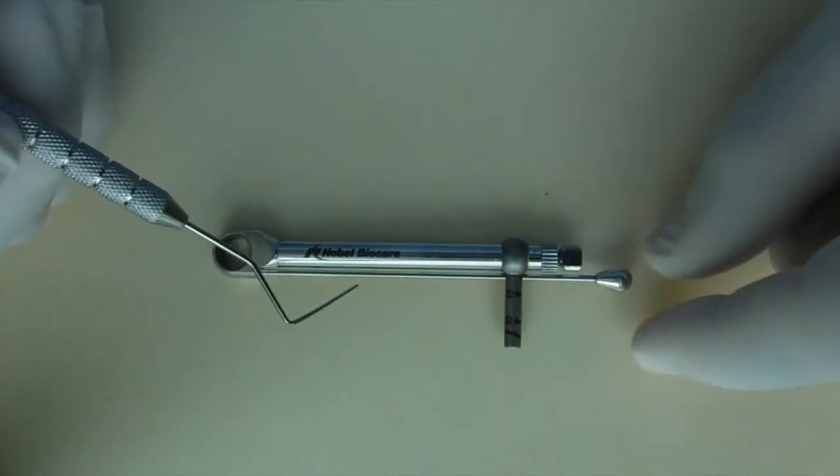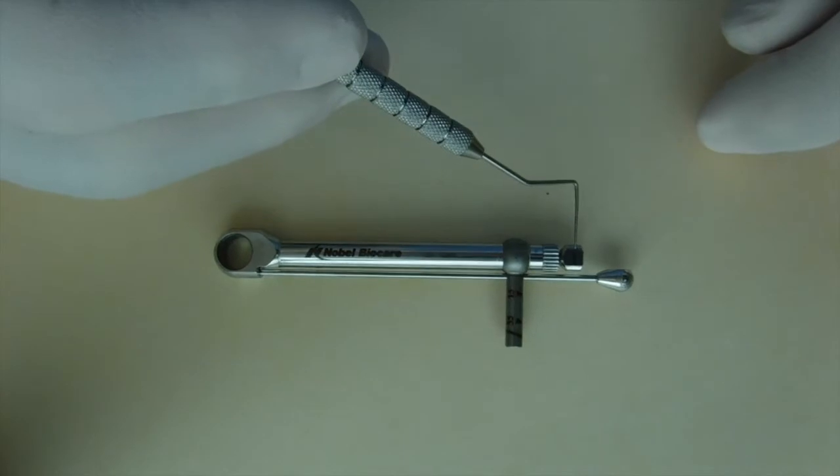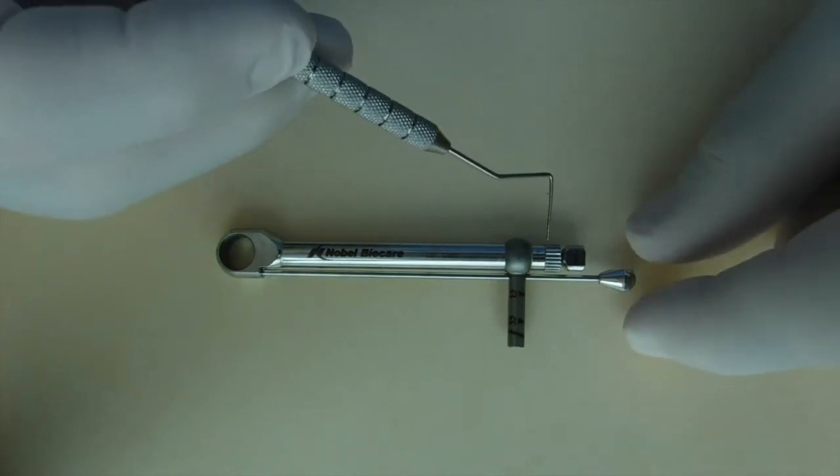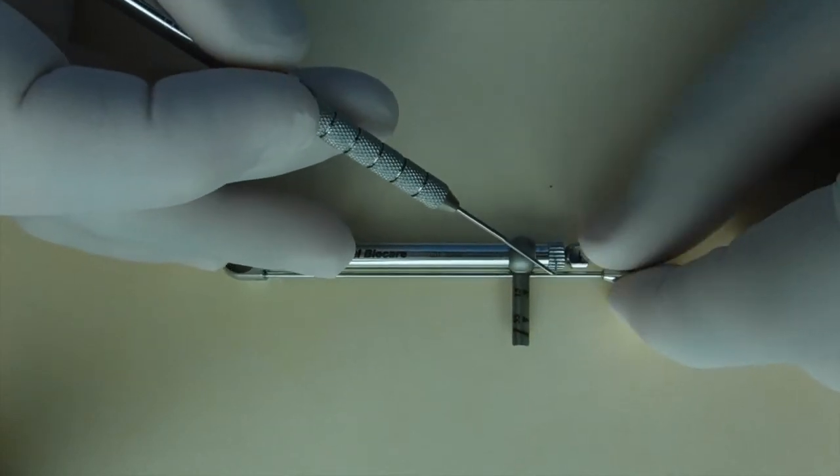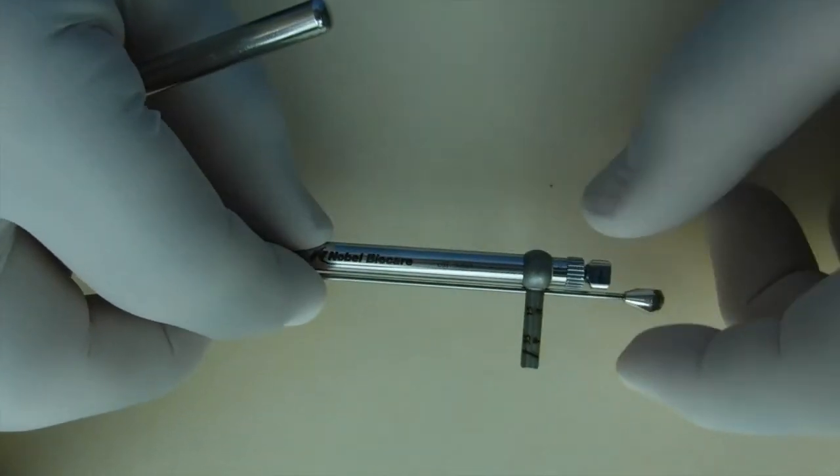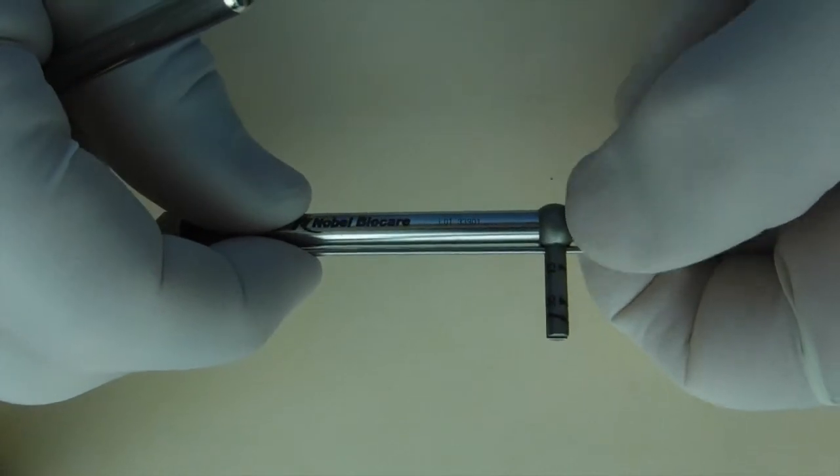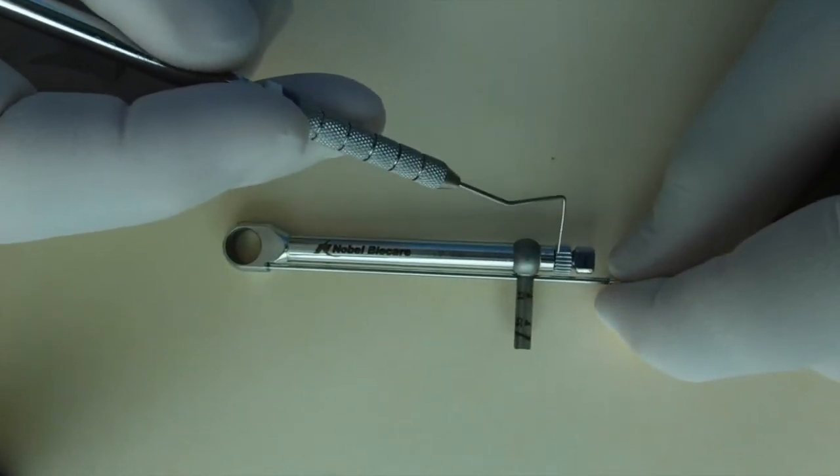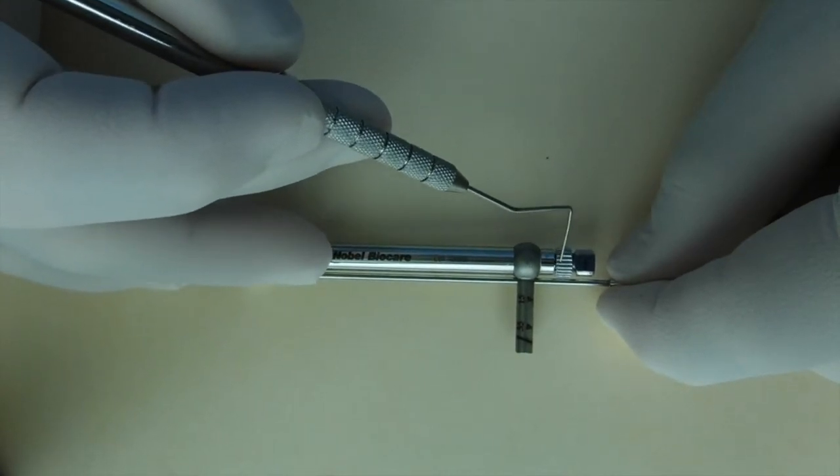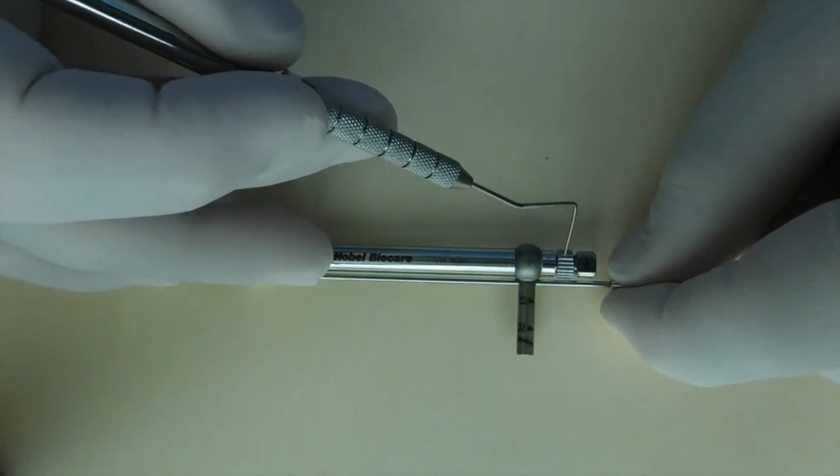You'll also notice next to the arrow indicator is a small gear which can be adjusted, and it can be loosened and it can be tightened.